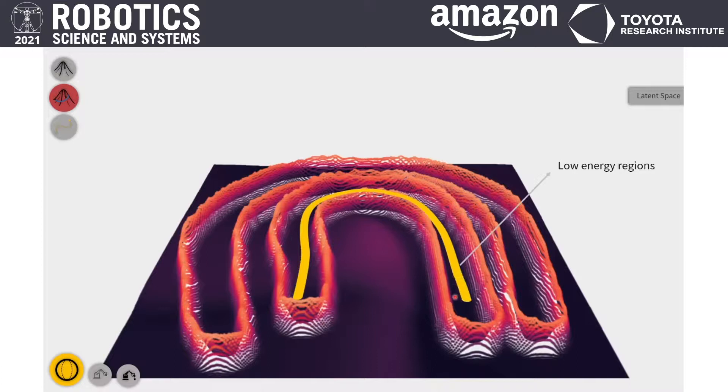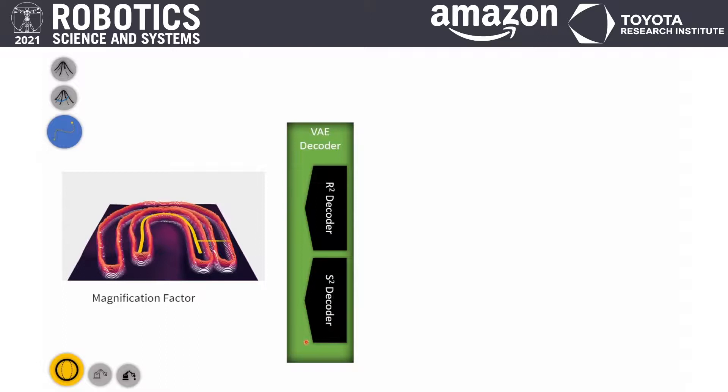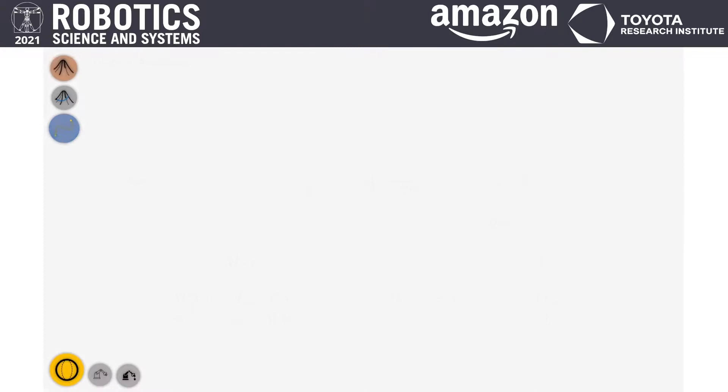To compute geodesic connecting two points on the manifold, this barrier will guide the geodesic to follow the trend of the data by following the low-energy regions. By decoding geodesics, we achieve a motion trajectory similar to the demonstrations.